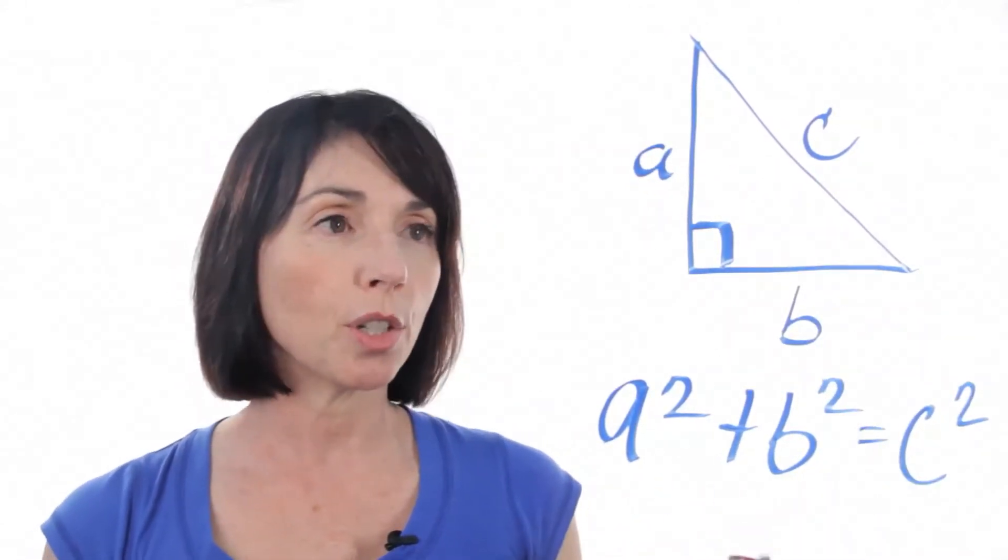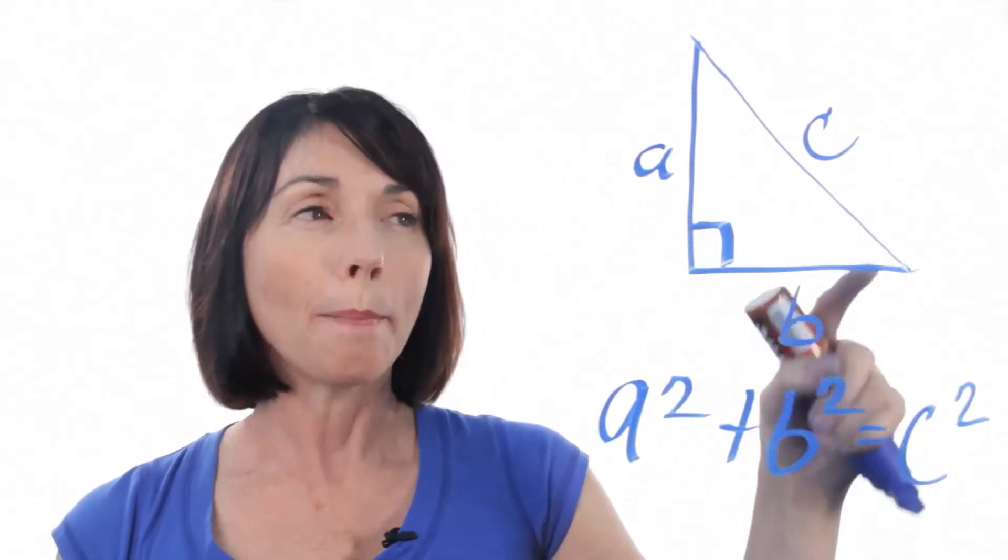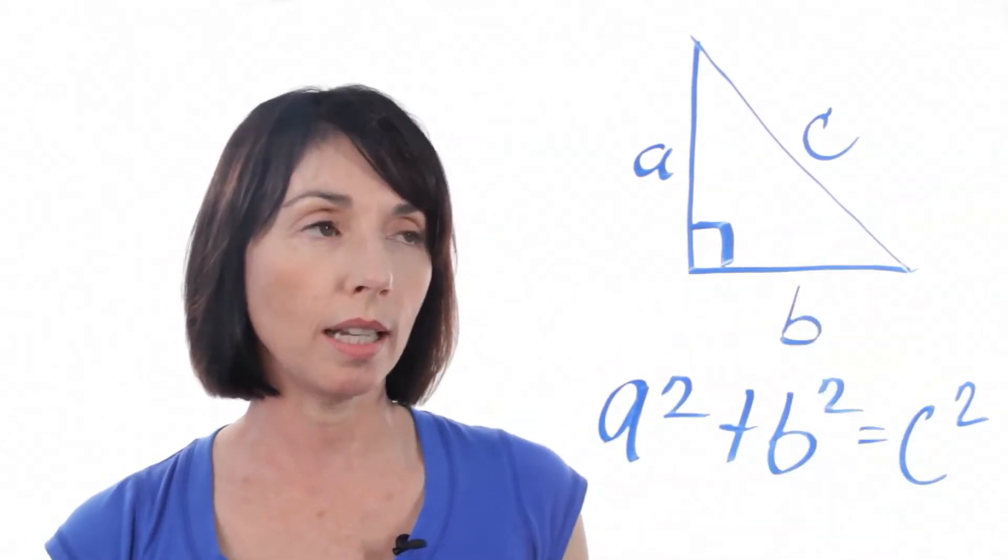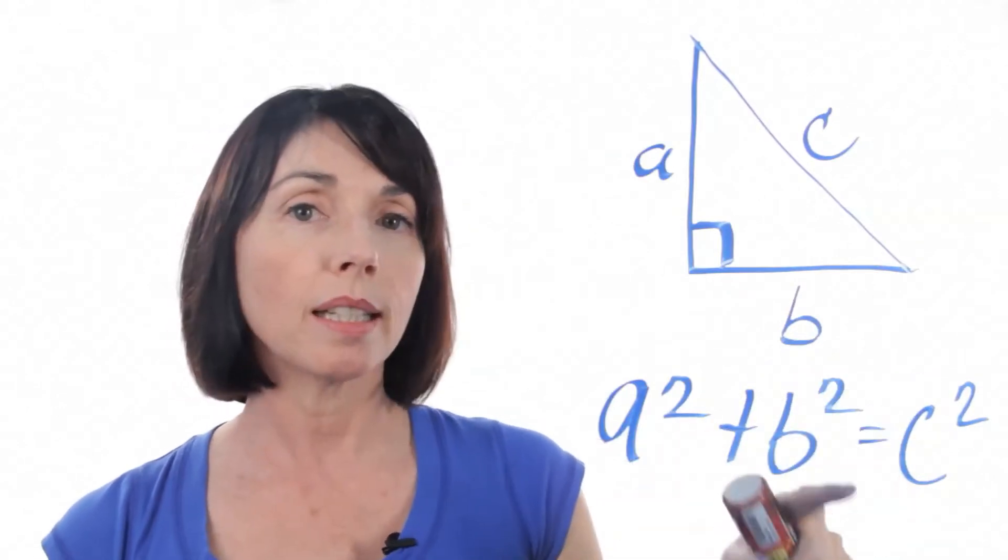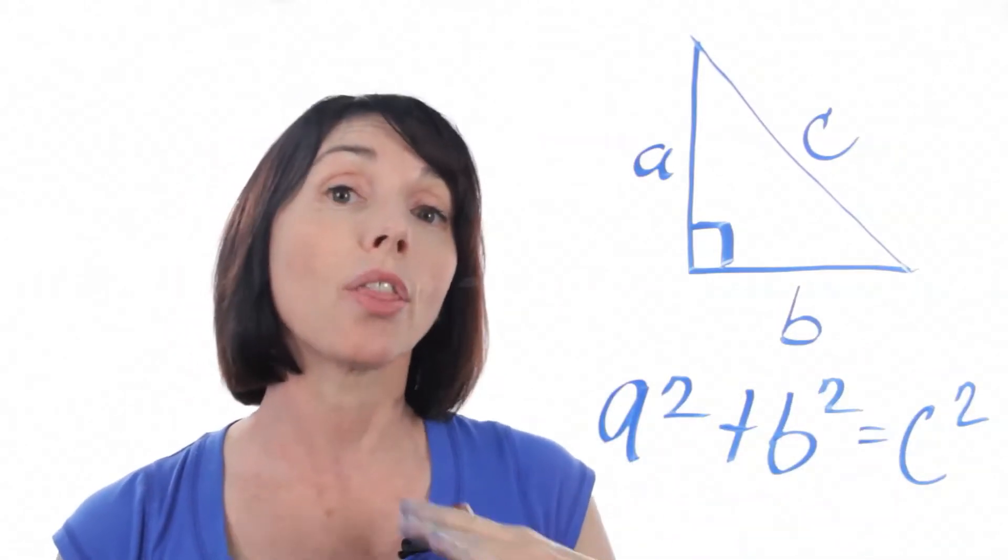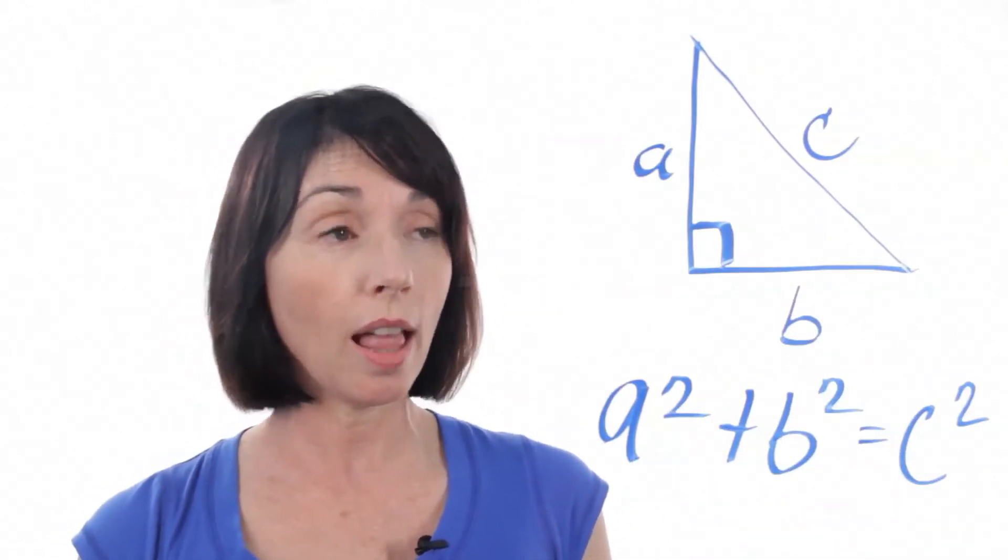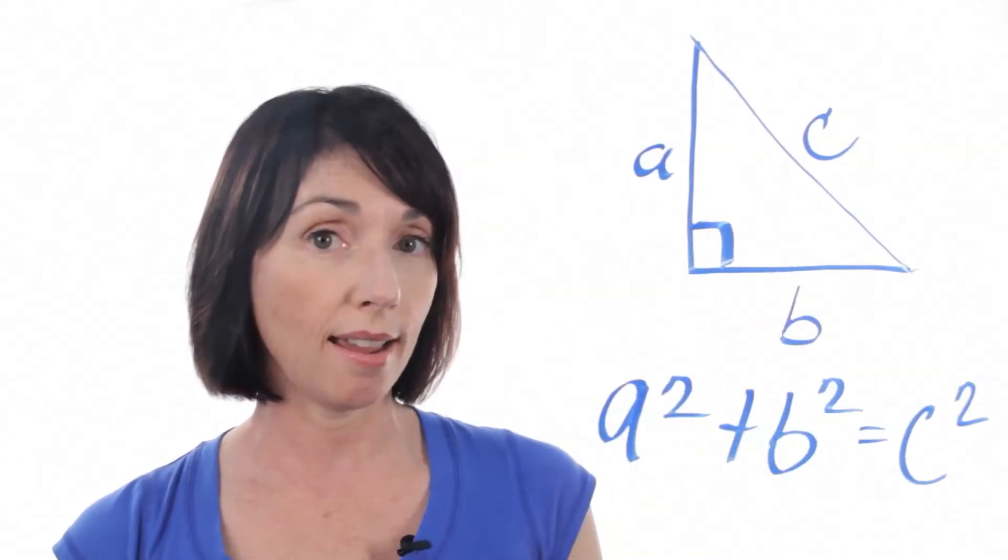Now, it doesn't matter so much which side you call A and which side you call B, but it does matter which side you call C. In this formula, C is the hypotenuse. It's the longest side of the right triangle and it's always the side that's opposite the right angle.